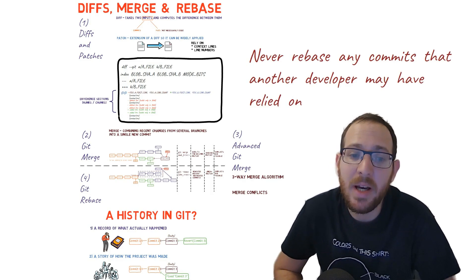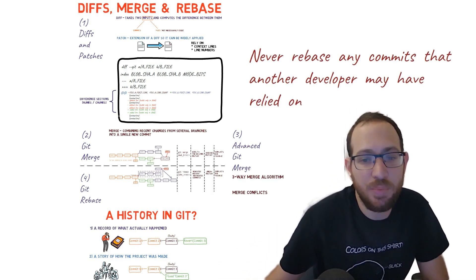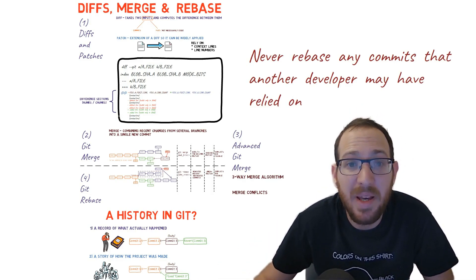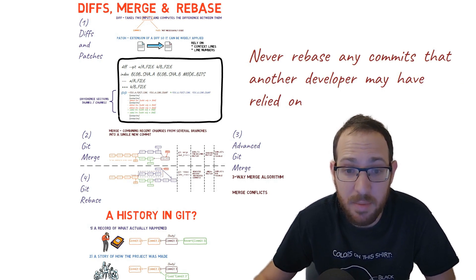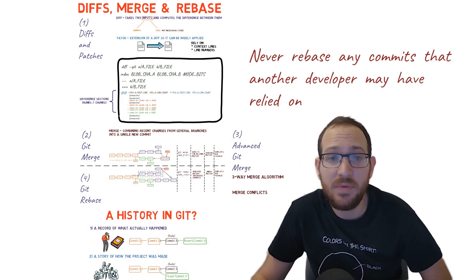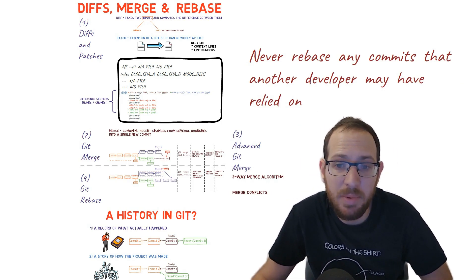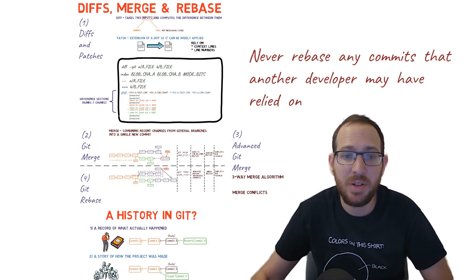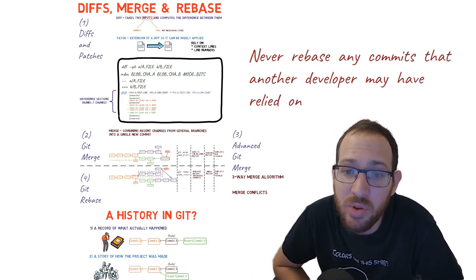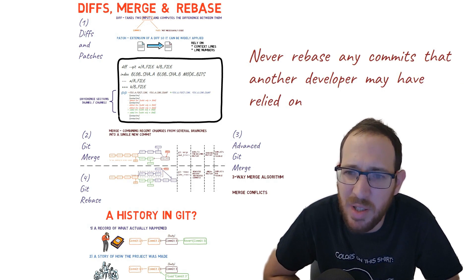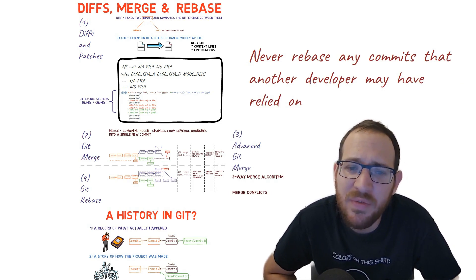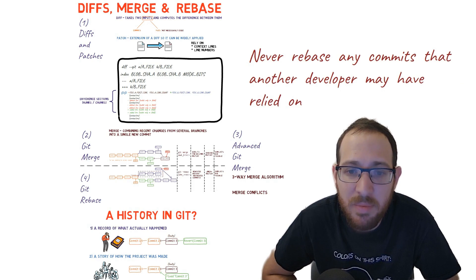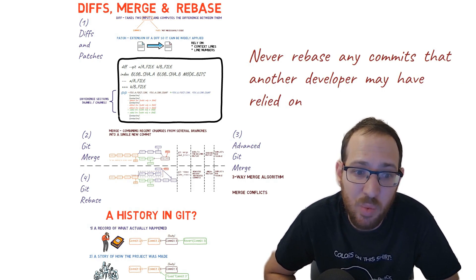I hope that by now you feel confident when reading the output of git diff, and that you have a better understanding of what a git commit is, the process of merge, resolving conflicts, and rebasing. In future videos, we'll dive deeper into different corners of git and will definitely rely heavily on these last few videos. You should now feel very comfortable working with git across a myriad of different scenarios and workflows.